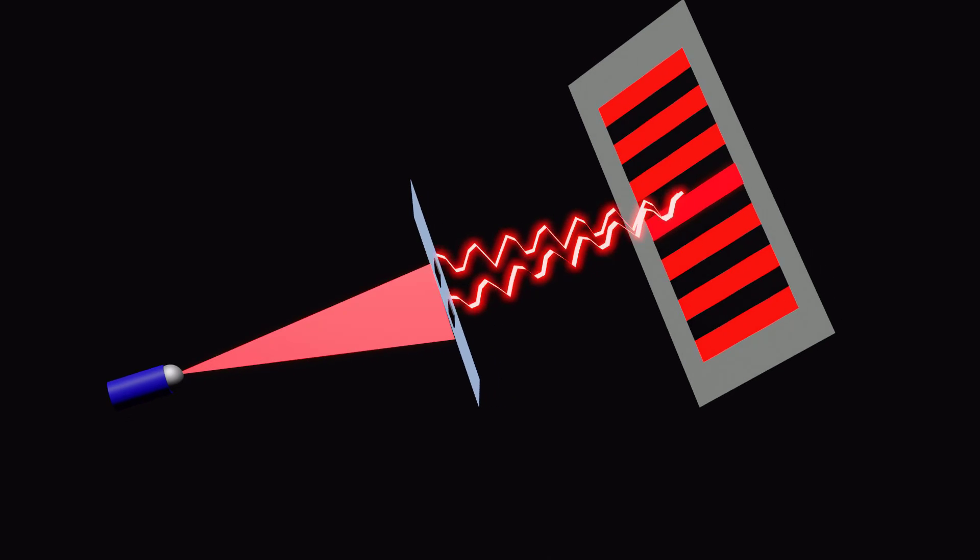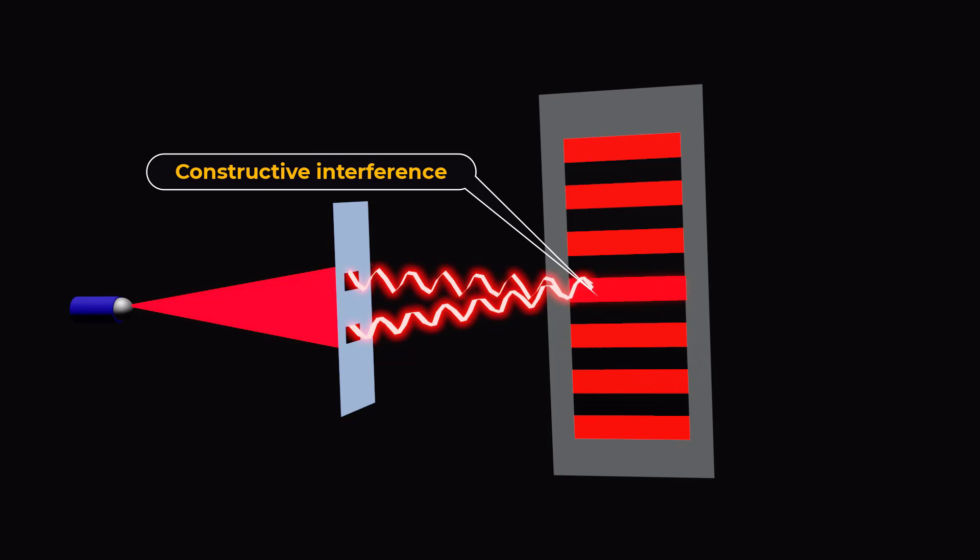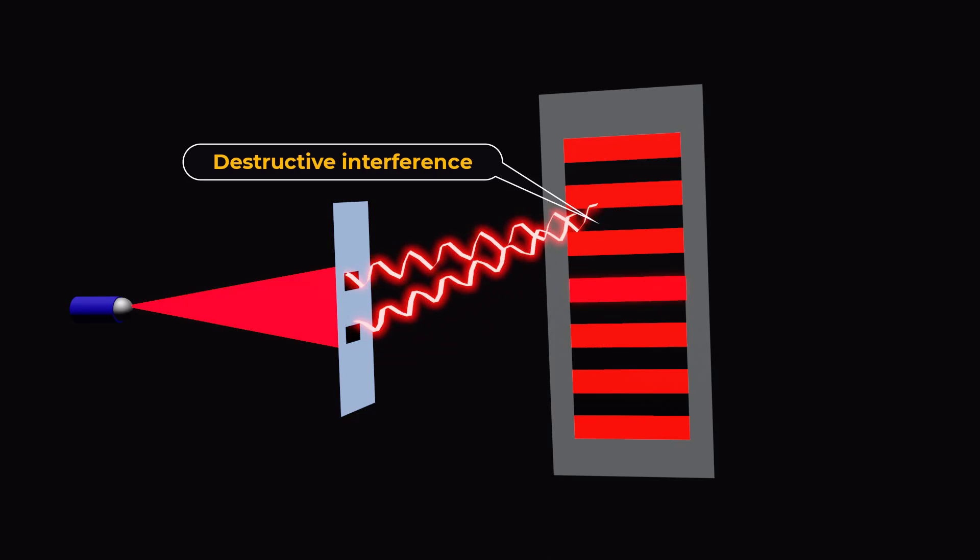This interference pattern indicates that light is behaving as a wave, interfering constructively at some points and destructively at others.